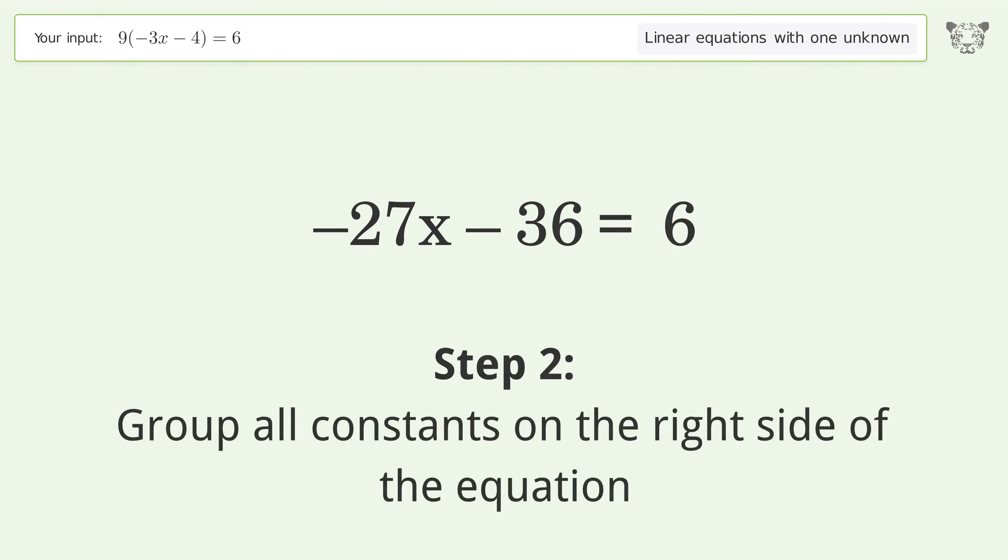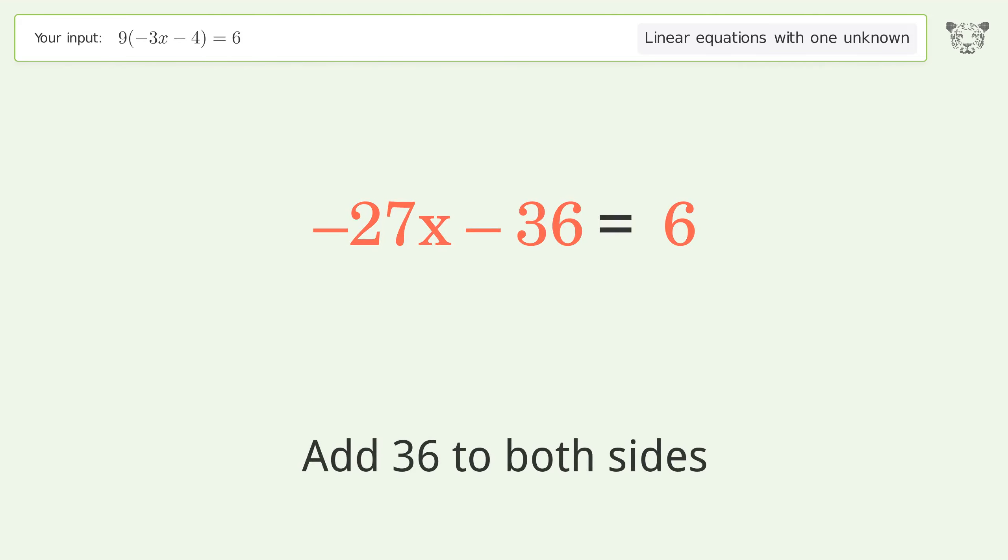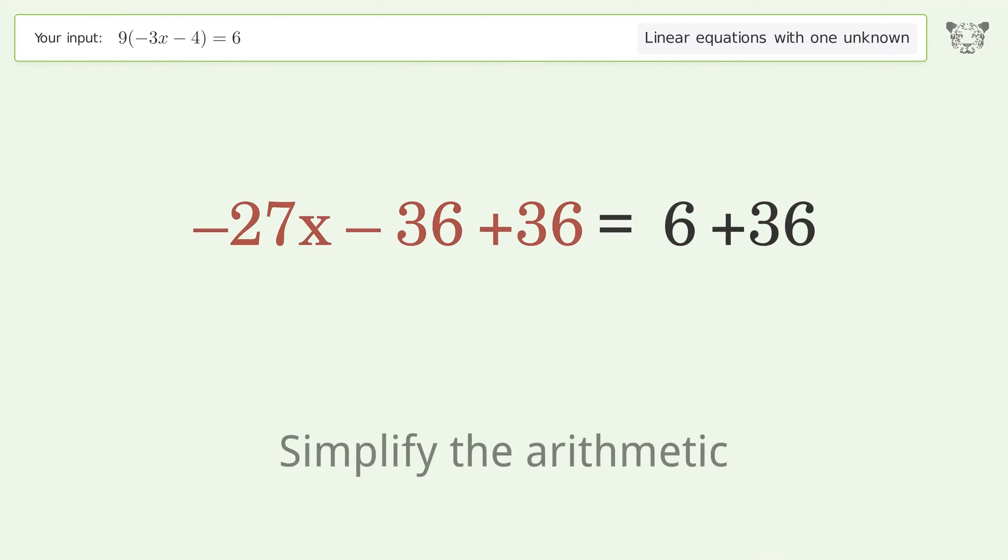Group all constants on the right side of the equation. Add 36 to both sides. Simplify the arithmetic.